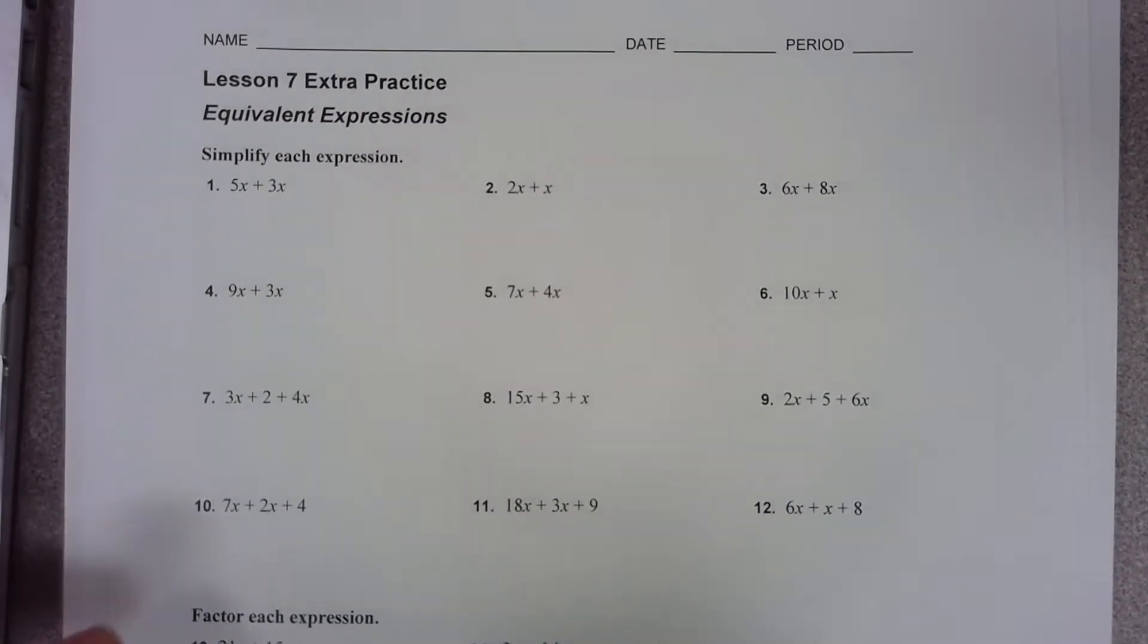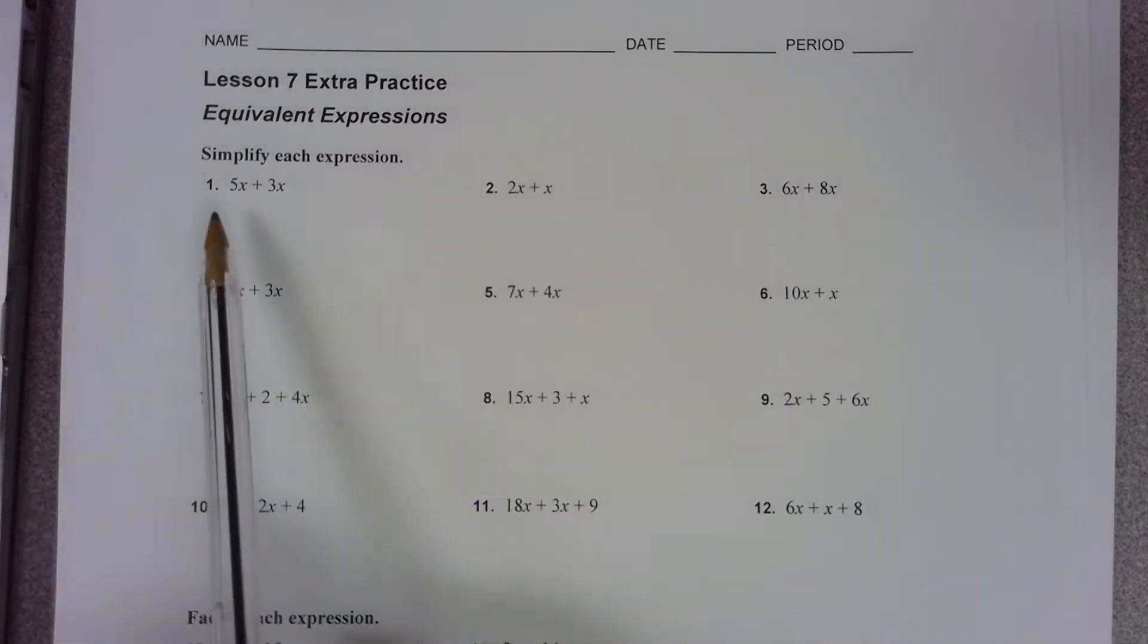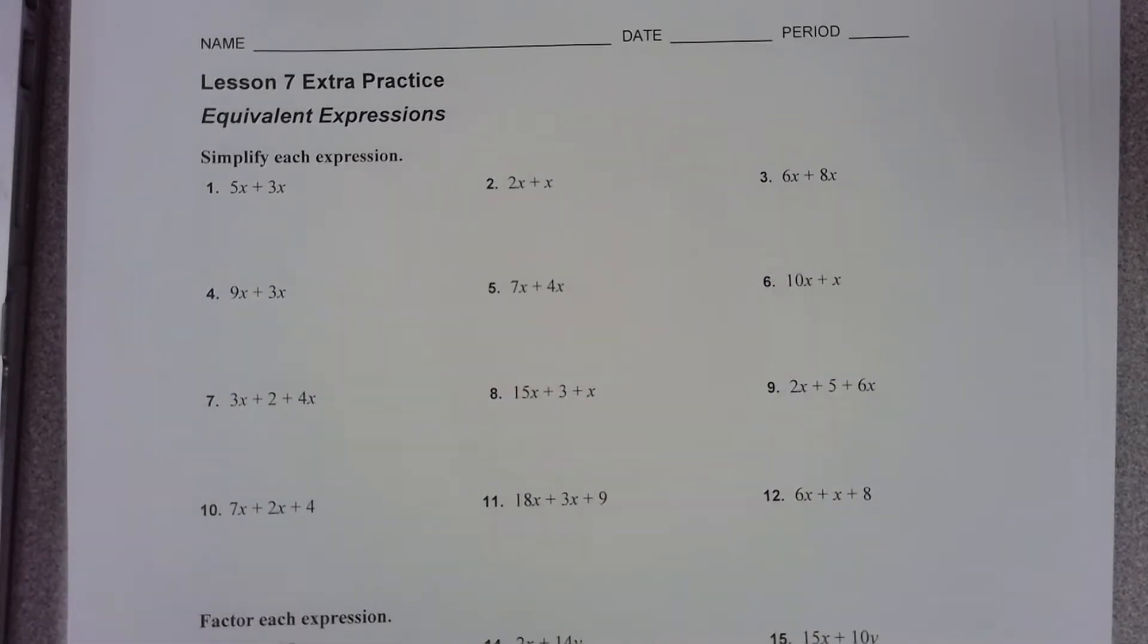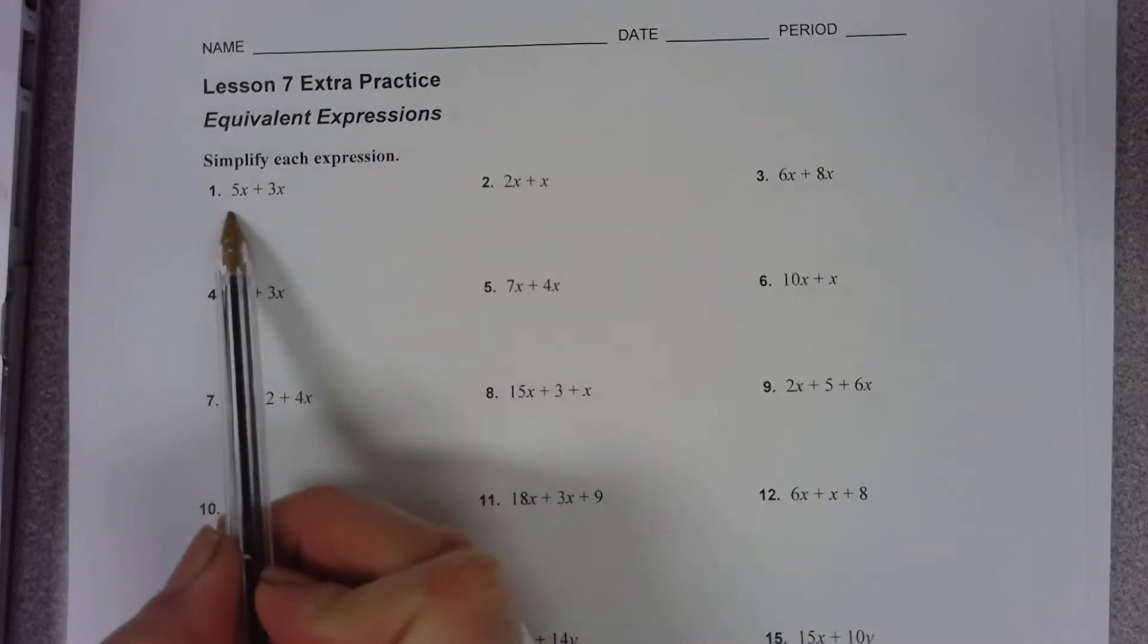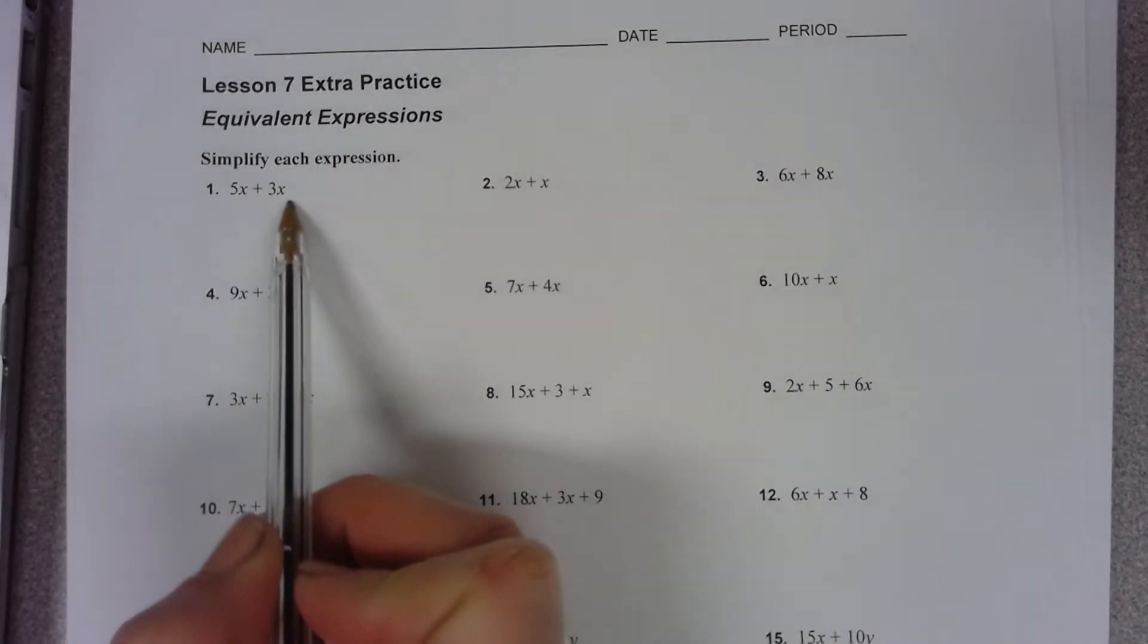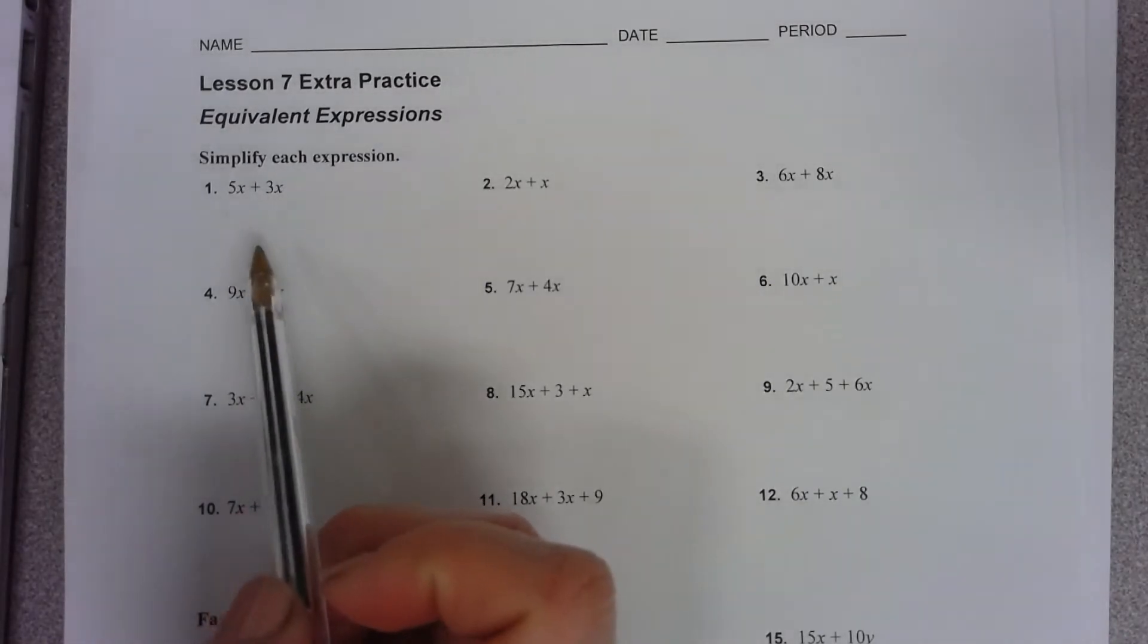So when we're simplifying, remember, we want to combine as many terms as we can that are alike. And it looks like in these first problems here, they're all the same term. So we just have to work on combining them. So 5x and 3x are on the same level. They're the same type of term, so I can combine them.